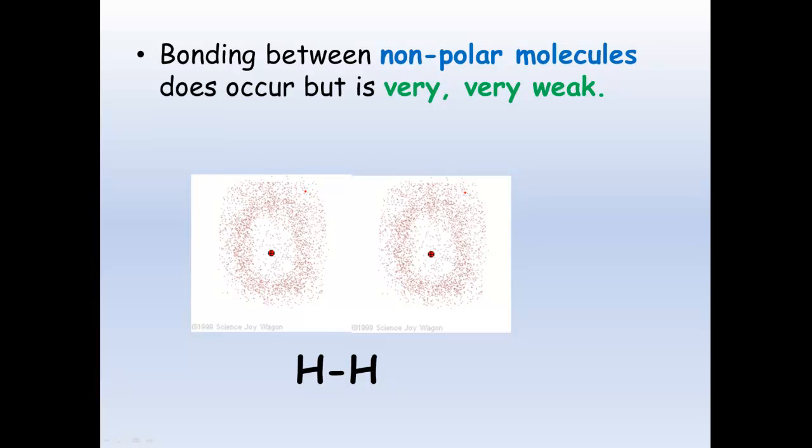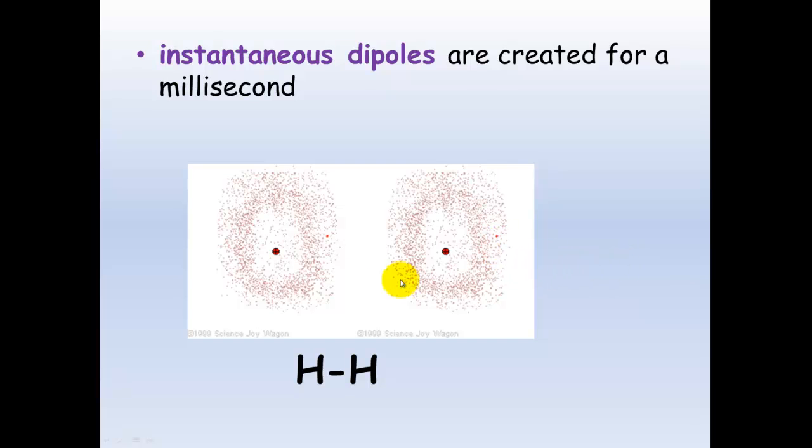This is important when it comes to dispersion forces. The reason being, if I can stop this at any point, these electrons will be in different positions. And what they can do is set up what's called an instantaneous dipole, which are created for just milliseconds. But this instantaneous dipole here now will give this side of the hydrogen a very slight negative charge.